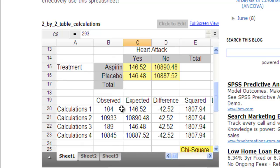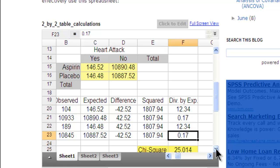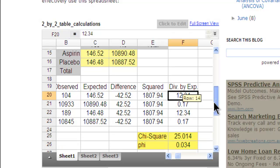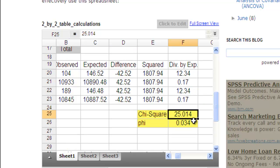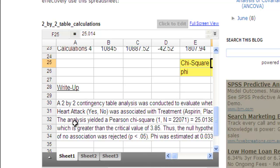And then it does the calculations of the difference between observed and expected for each of the four cells to help calculate the ultimate chi-square value. So then it sums those differences. This is the chi-square value, and that's the phi value. And then the write-up actually changes based on what you're inputting into the table above.